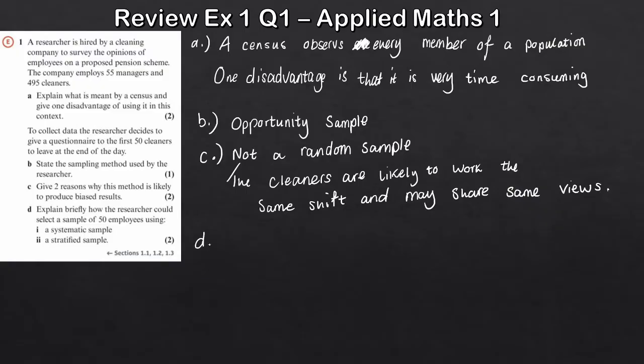Finally for part D, two parts - first part we want to explain briefly how the researcher could select a sample of 50 employees using a systematic sample. Remember a systematic sample is where, for example, you give every fifth person - the fifth person, the tenth person, the 15th, the 20th. How do we decide who's part of the systematic sample? Well, first we need the total - that's the number of cleaners plus the number of managers, so 495 plus 55 to give us 550 in total employees.